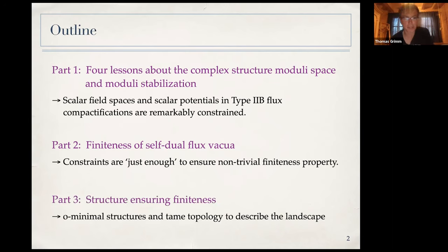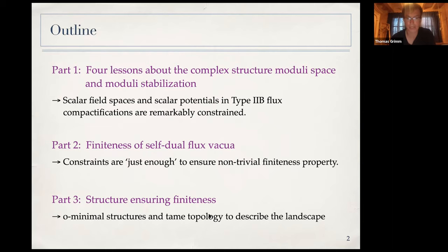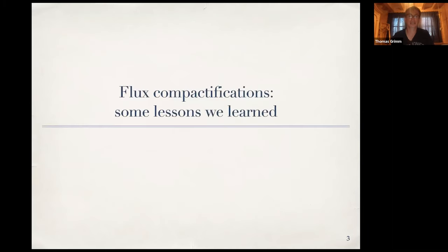The second part will be about the proof of some very non-trivial finiteness theorems formulated in these flux compactifications. The upshot is that this remarkably constrained structure is just enough to ensure finiteness properties. Finally, I want to argue that the underlying structure of the string theory landscape — this set of theories consistent with quantum gravity — is actually something mathematically well defined, namely an O-minimal structure.